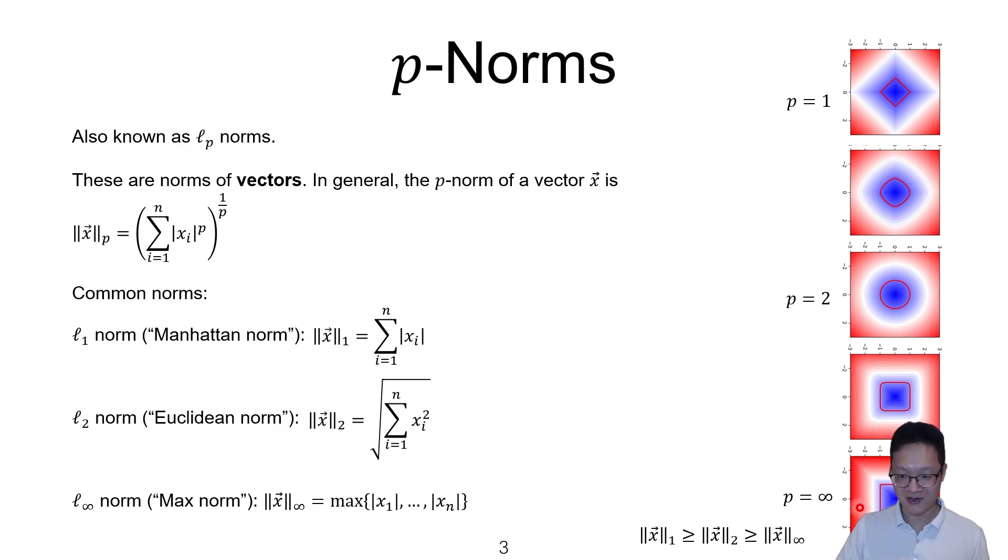You can do the same similar argument for infinity and 2. For example, if I just pick this point near the corner of the square, the same point on this plot would actually lie a bit outside of the circle, meaning that a point with an infinity-norm of 1 can have a 2-norm that is larger than 1. Okay, so that's this inequality here.